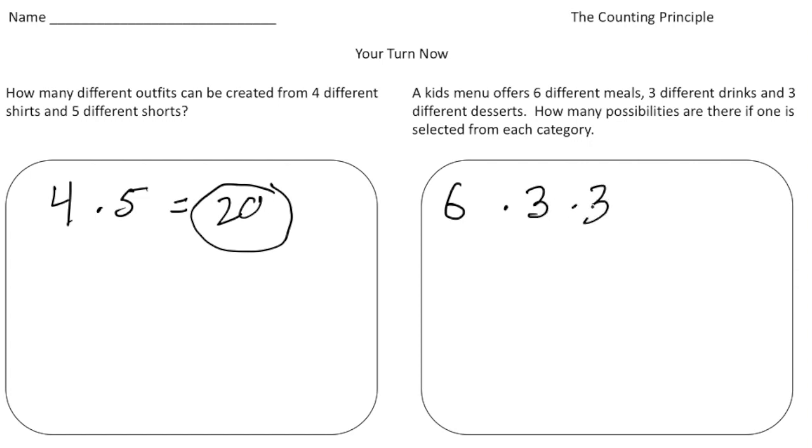And when I do that, well, three times three is nine, and nine times six is 54. So there's 54 different combinations from three different options on the menu. All right, how'd you do?